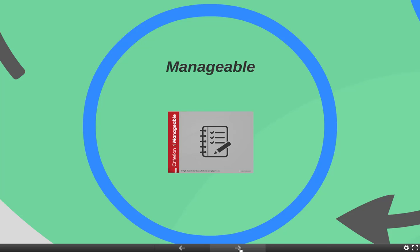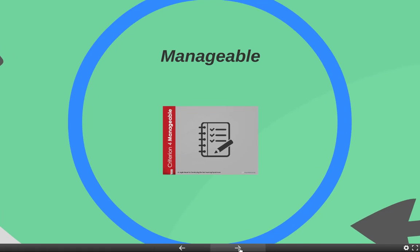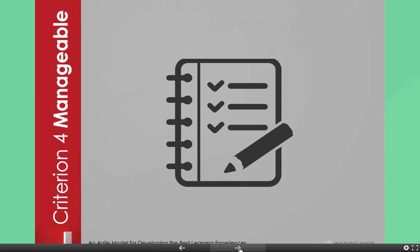Last but not least, the fourth criterion is something that's manageable. Be realistic. Don't be unrealistic about this stuff. Notice that on this slide right here, it does go into a notebook and it's a checklist. Checklists work. Task management is a big, big deal in regards to this model.